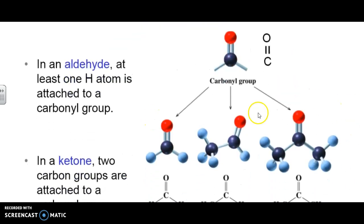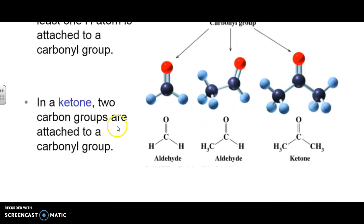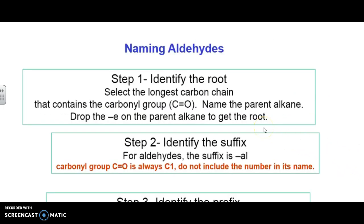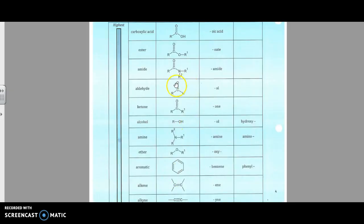So yet again, we're reviewing here. In an aldehyde, at least one hydrogen is attached to the carbonyl group, whereas in a ketone, they can be attached anywhere. Similar rules to what we've done so far. If we remember our priority list here, aldehyde and ketones are above everything we've learned before. This will be important when we're trying to name something with the end suffix of an al or a one.